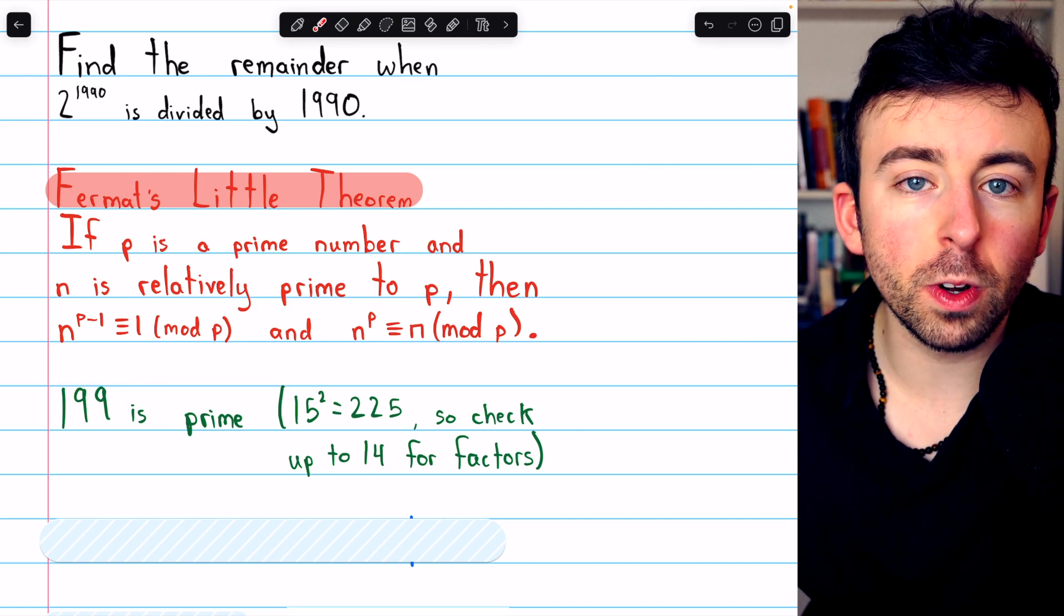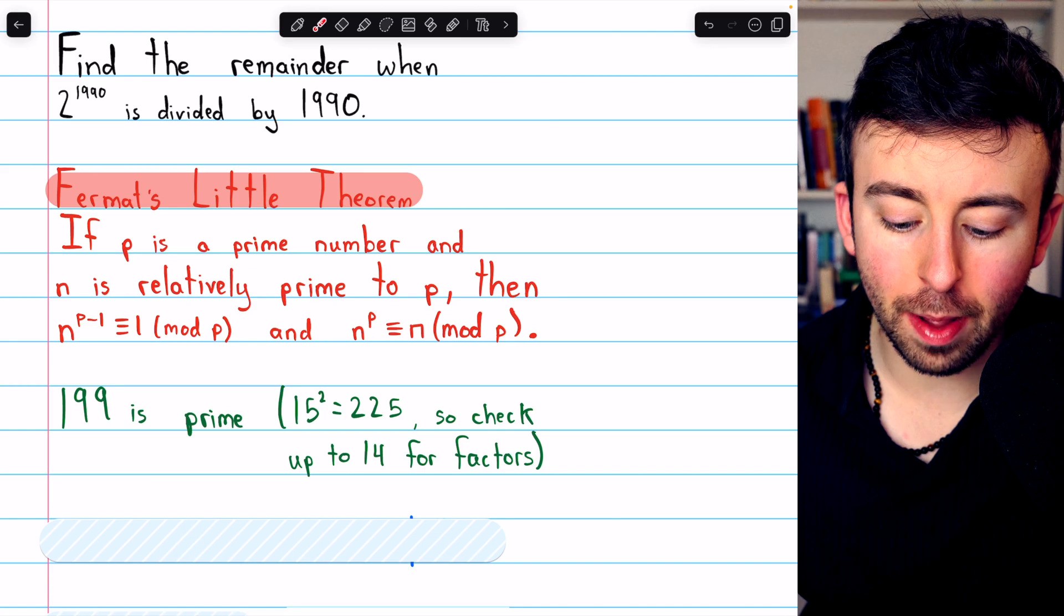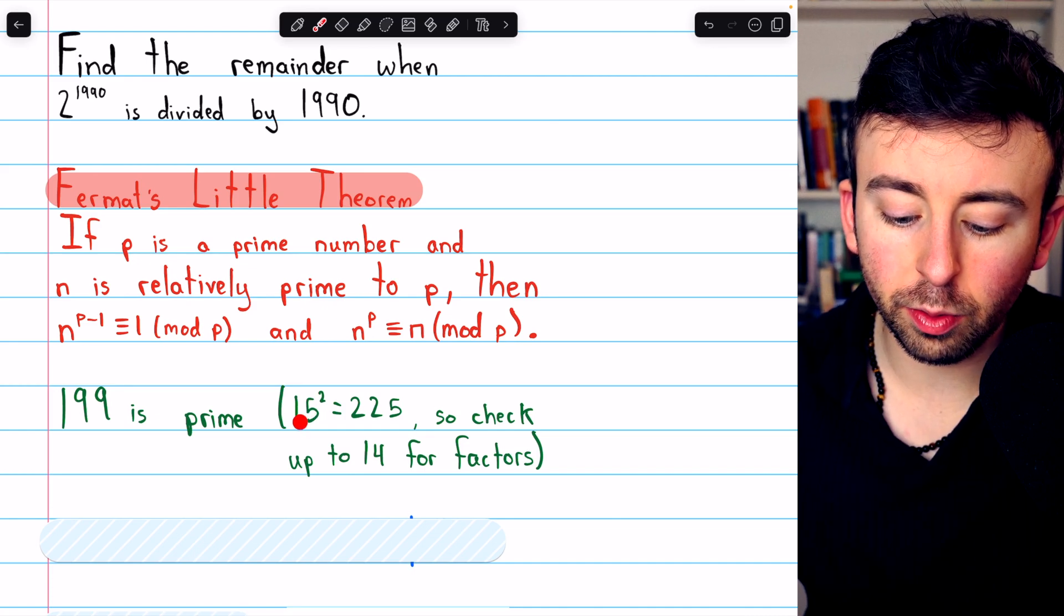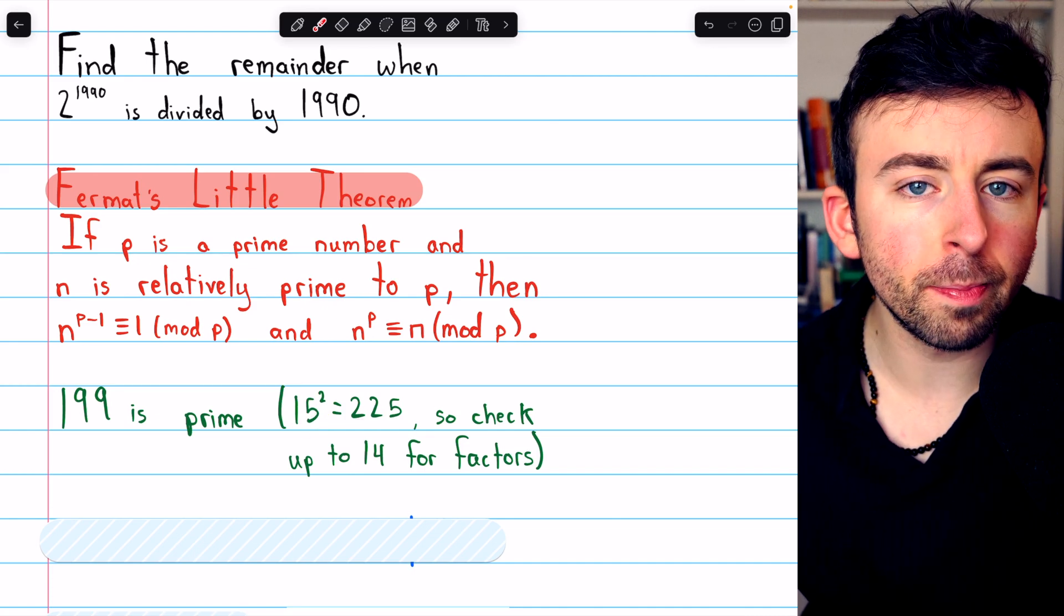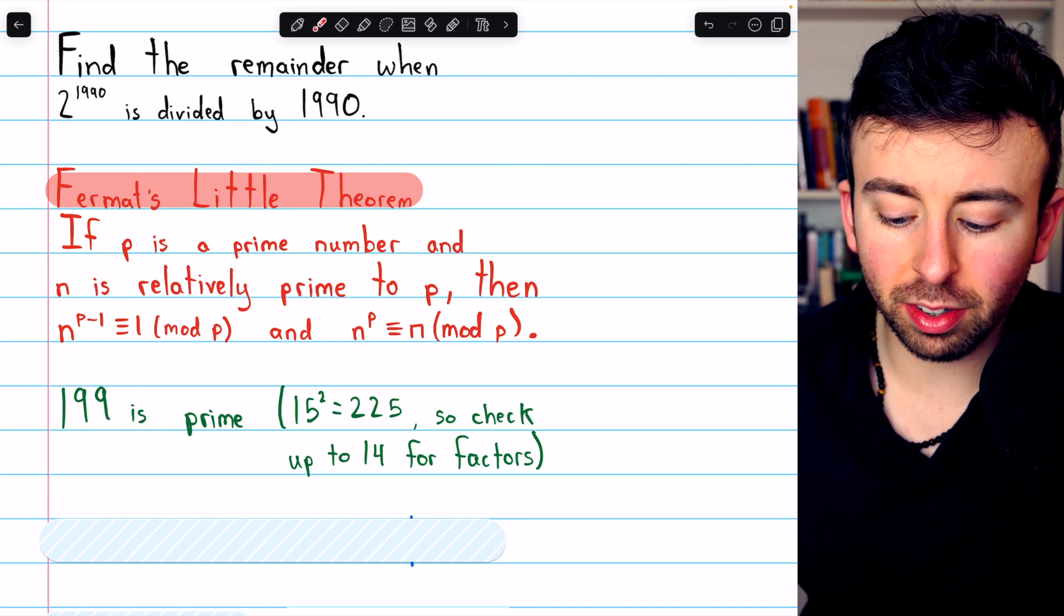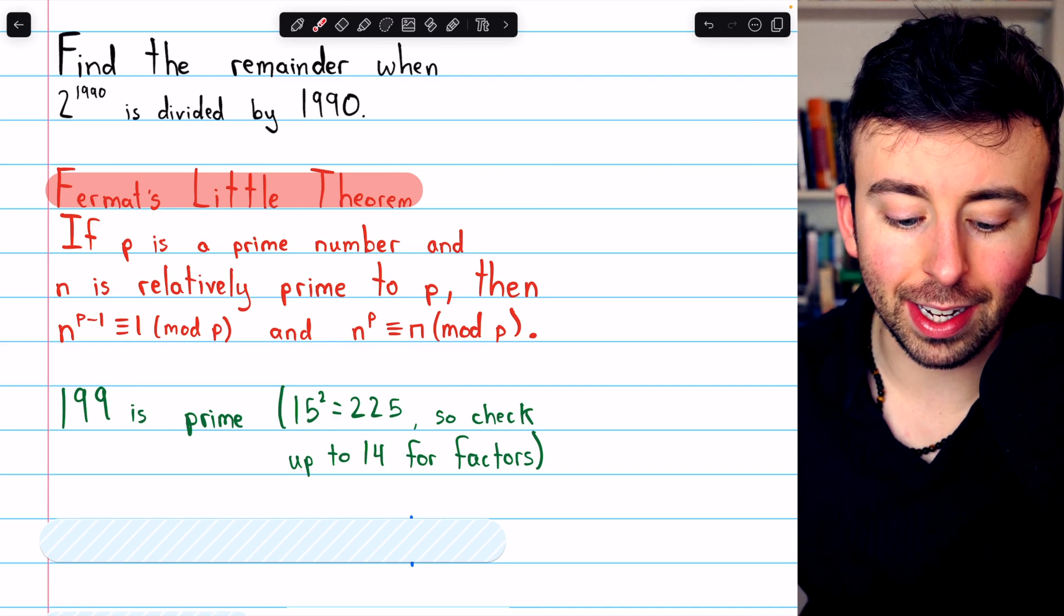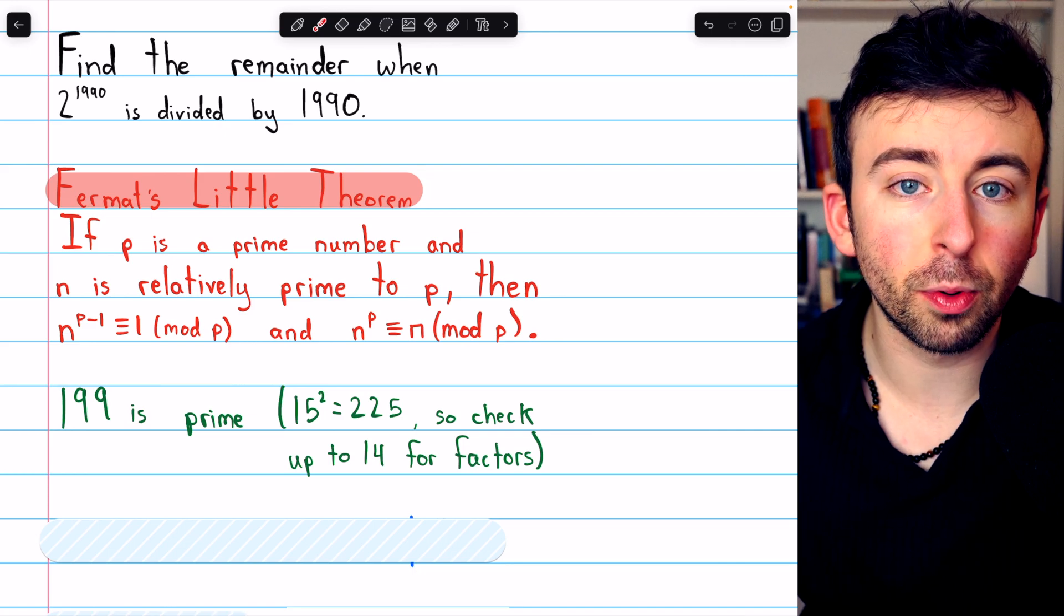Quickly, just state this again. 199 is indeed prime. You could check that by noticing 15 squared is greater than 199. So you would just have to check factors up to 14. You won't find any. Indeed, 199 is prime.